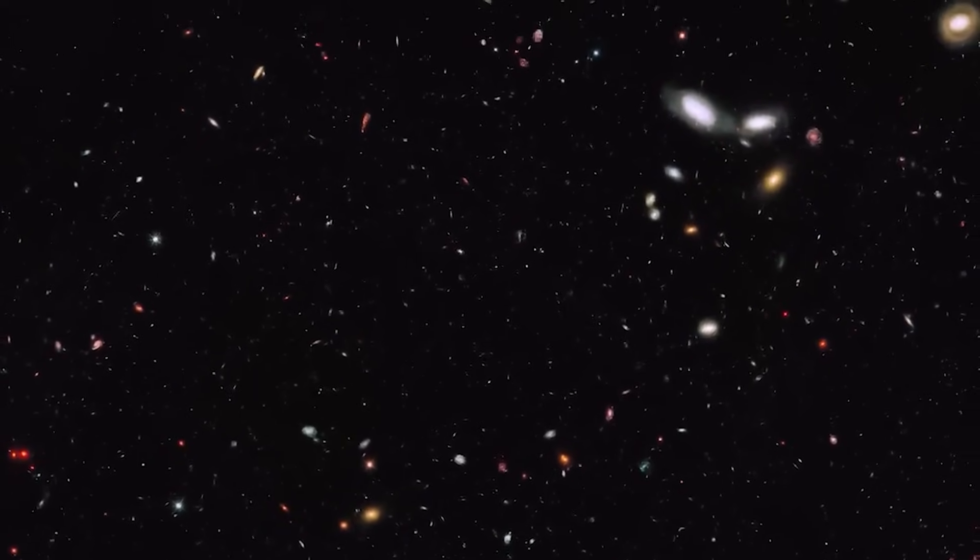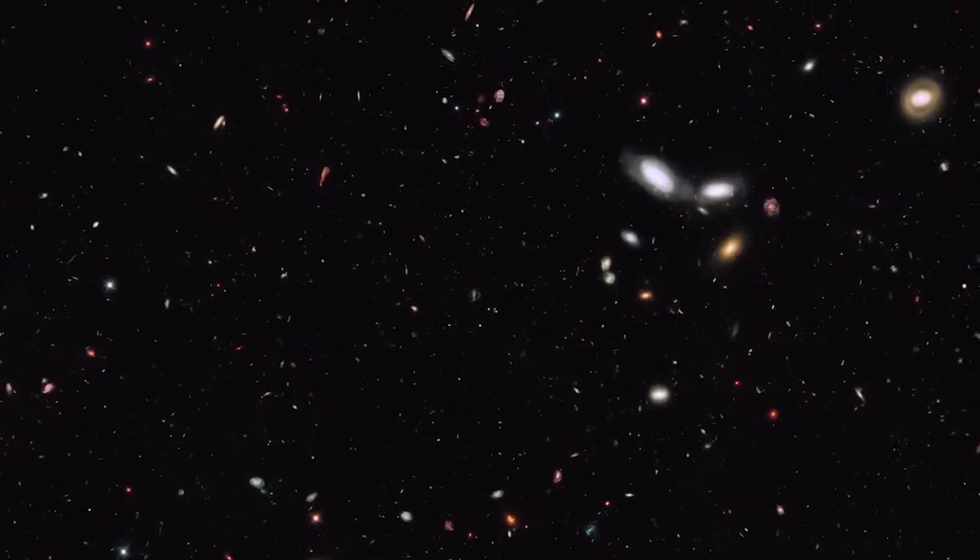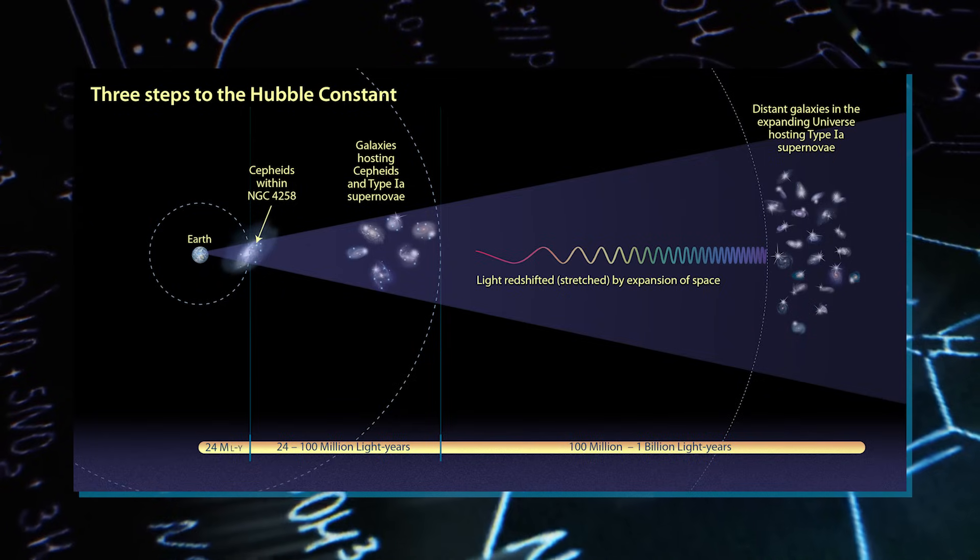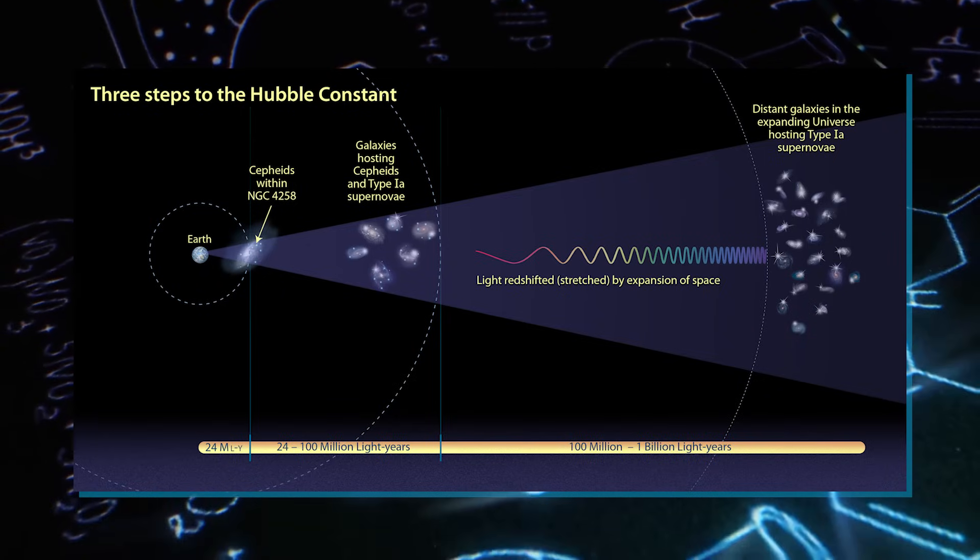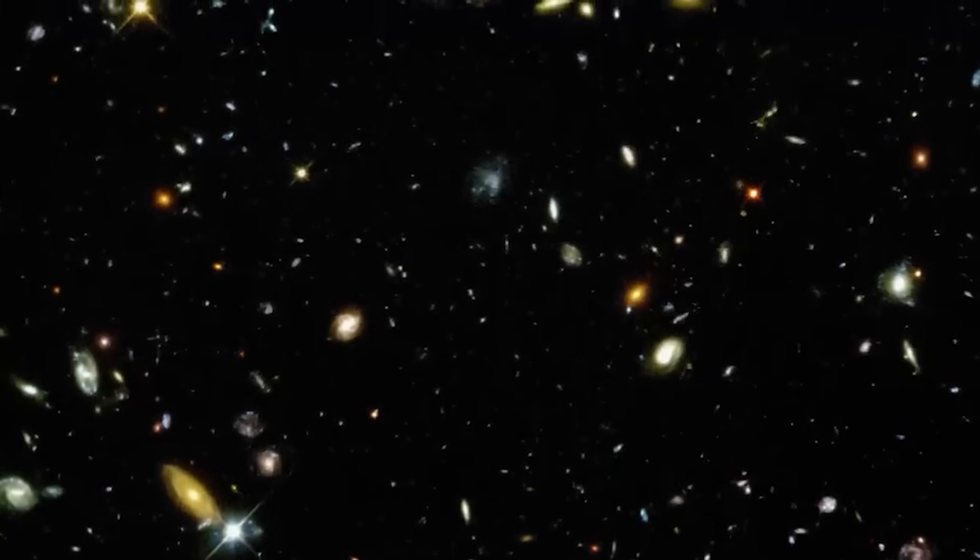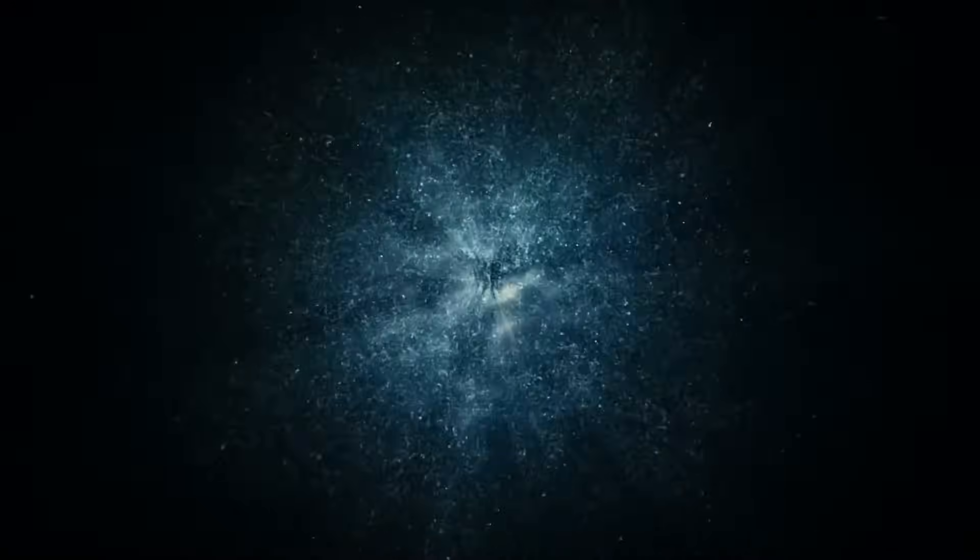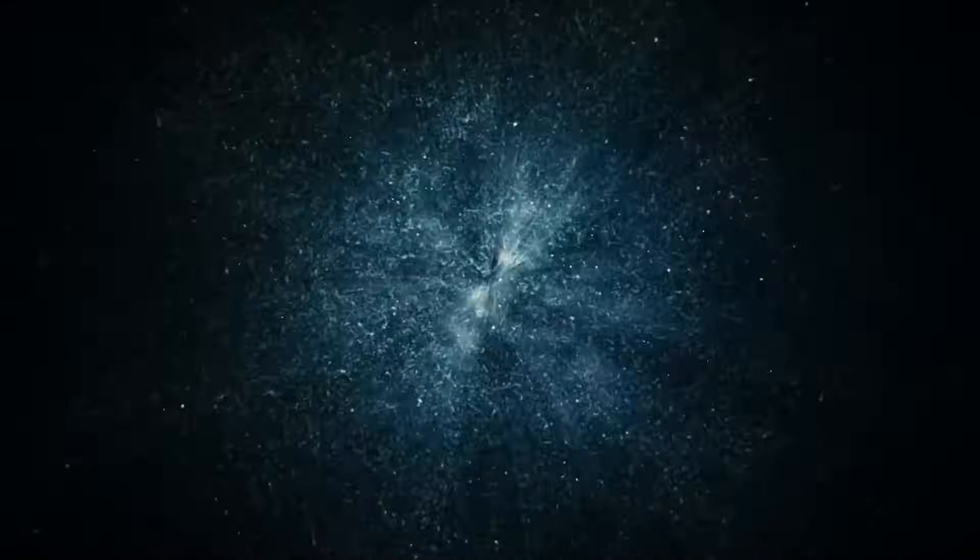One idea is that there might be a mistake in the first method they use, which is called the distance ladder. The distance ladder is like a chain of steps, and each step relies on the one before it. So if there's a mistake in the first step, it messes up all the others. Even if all the other steps are right, if the first one is wrong, everything gets thrown off.